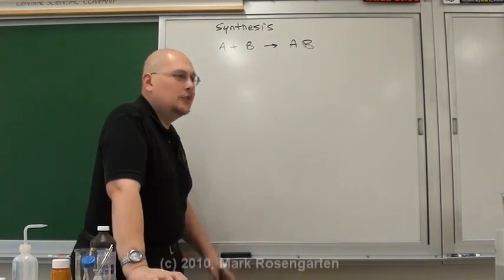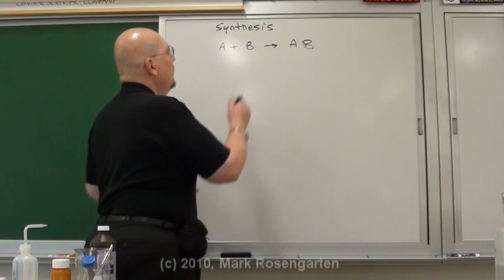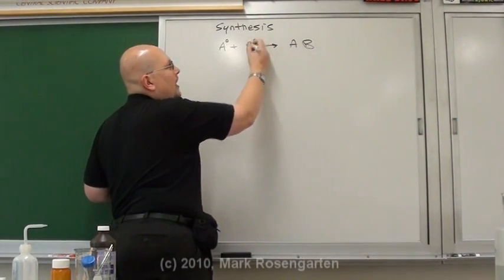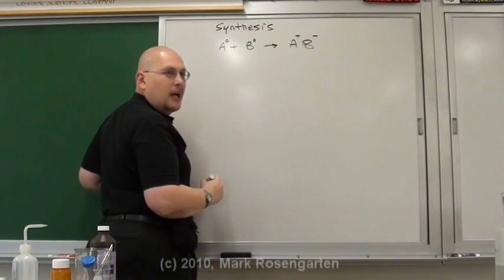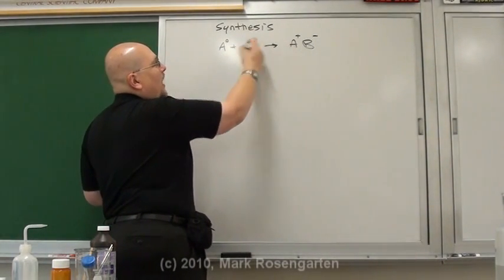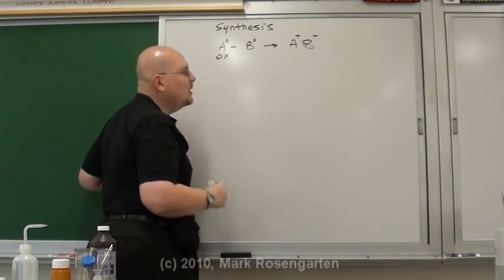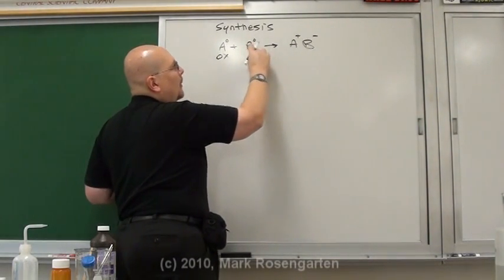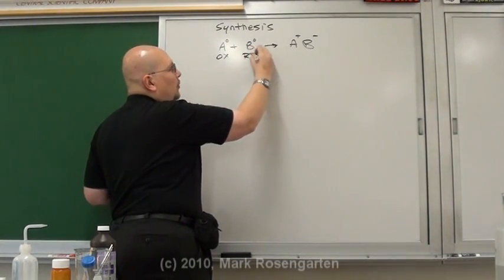In a synthesis reaction, two elements come together to form a compound. Typically, you're talking about a metal and nonmetal coming together in such a way that they form an ionic bond, where the metal undergoes oxidation as it becomes more positive in charge by losing electrons, and the nonmetal becomes more negative in charge by gaining electrons, called reduction.